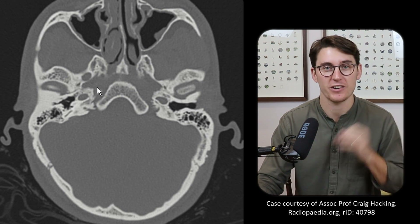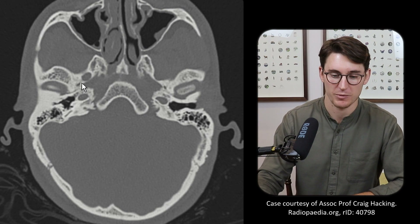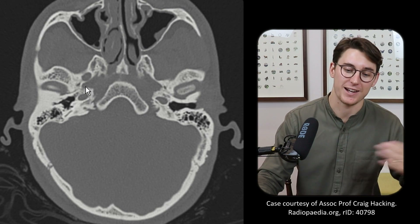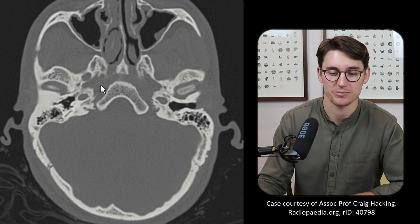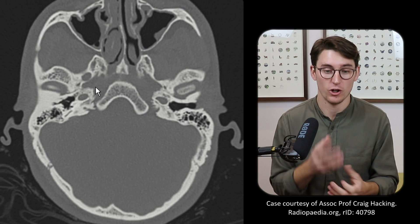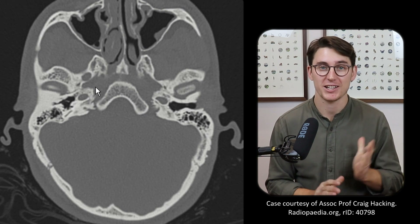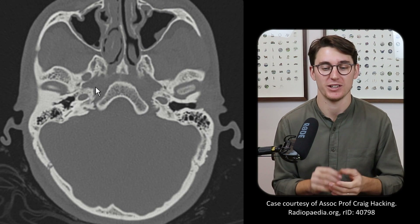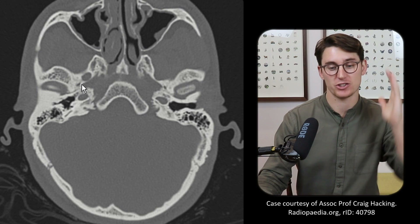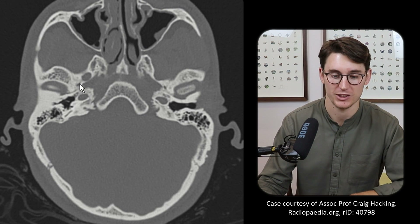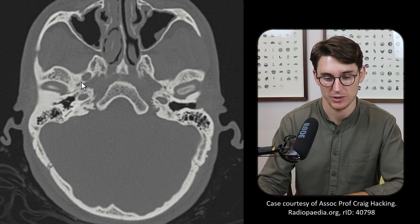Posterior and lateral to the foramen ovale is a very small, distinctive foramen in the posterior and lateral portions of our sphenoid — the foramen spinosum. The foramen spinosum has no nerves passing through it; instead it carries the middle meningeal artery. Our external carotid artery gives off the maxillary artery, which in turn gives off the middle meningeal artery that runs on the interior surface of our temporal bone supplying the meninges. This is the vessel that, if fractured on the side of the skull, can rupture and cause an extradural hematoma.